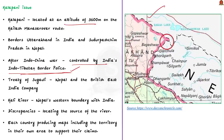Why is Kalapani disputed? Under the Treaty of Sugauli signed between Nepal and the British East India Company in 1816, the Kali River was located as Nepal's western boundary with India. However, there were discrepancies in locating the source of the river, which led to boundary disputes between India and Nepal. Both countries later produced maps supporting their own claims, leading to boundary disputes with each country including the territory in their own area.